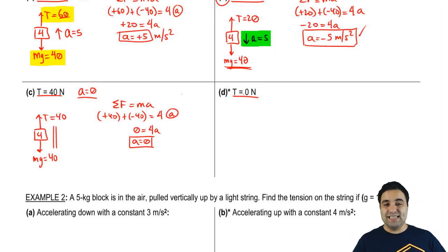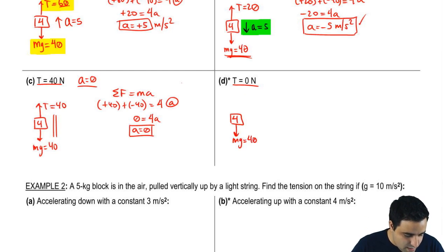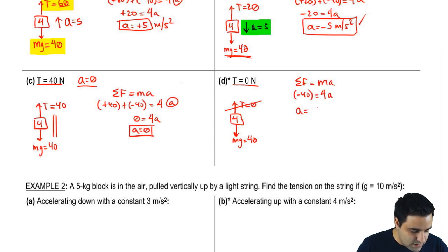I want you to do this one where the tension is 0, so there's no tension. Pause the video. Do it. It should be real quick. I'm going to jump right into it here. So 4, I have an mg equals 40, and I don't have a tension. So it doesn't actually exist. So when I do the sum of all forces equals ma, all I have is a negative 40 going down. Mass is 4. Acceleration is negative 10.